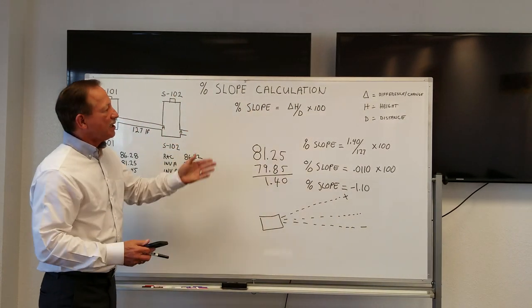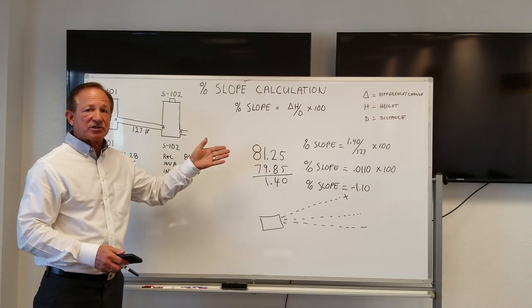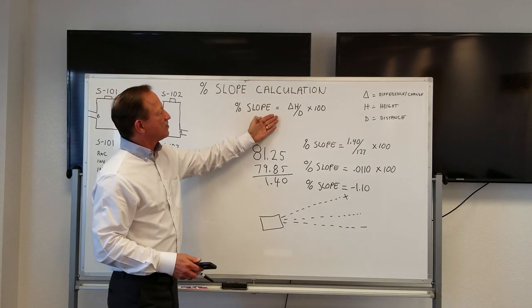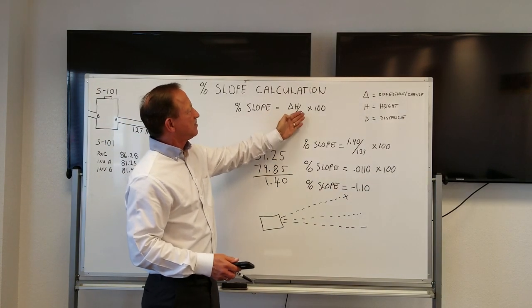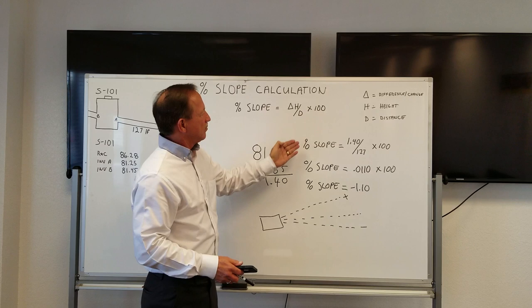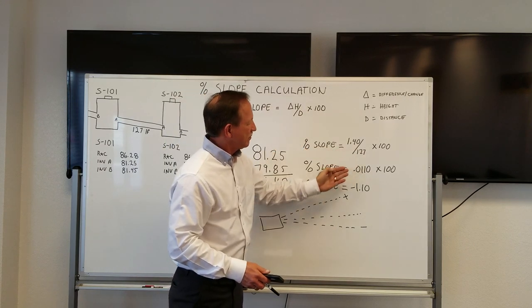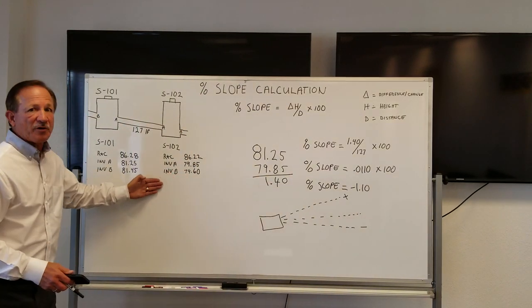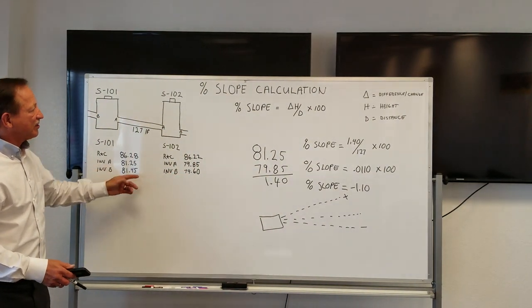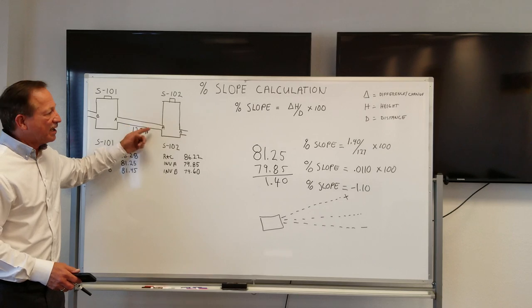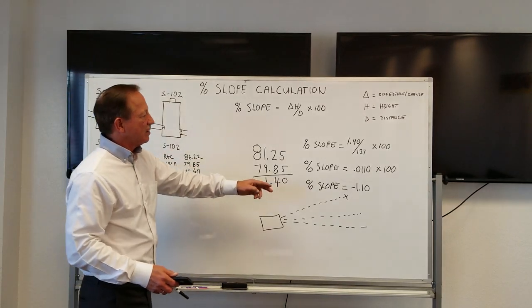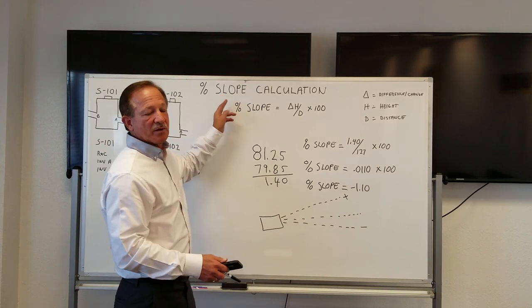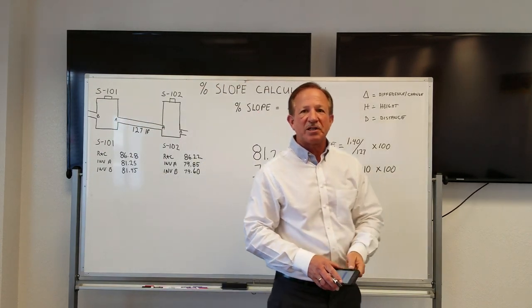So what we did here was some simple calculations from a simple equation: percent slope equals change in height divided by the distance times 100, which we did right here to get our answer. We got that information off our set of prints. The last thing we had to determine: am I laying uphill or downhill, plus or minus? Enter that number into your pipe laser and you've solved all your problems for the day. Now you can lay pipe.